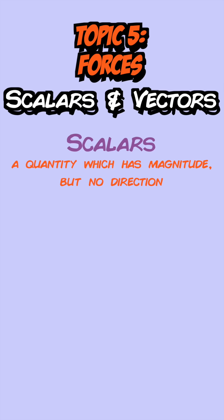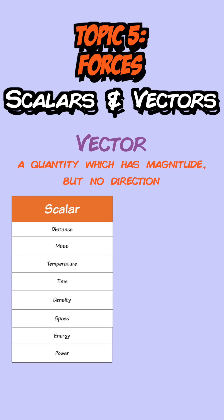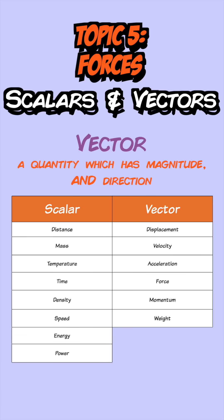A scalar is a quantity which has magnitude but no direction, whereas a vector has magnitude and direction. Here are some examples of each.